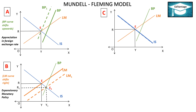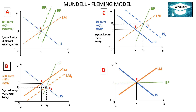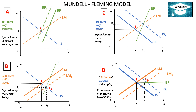Diagram C shows the government adopting expansionary fiscal policy such that the IS curve shifts to the right and passes through point E1, where internal and external balance is achieved. Diagram D shows the role of both monetary and fiscal policy when there is perfect capital mobility, i.e., the BP curve is a horizontal straight line parallel to the x-axis. The LM curve and IS curve shift to the right, and LM1, IS1, and the BP schedule intersect at point E1, where internal and external balance is achieved at a higher level of national income OY1.